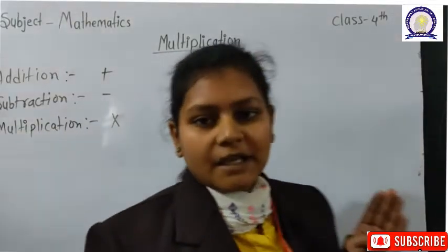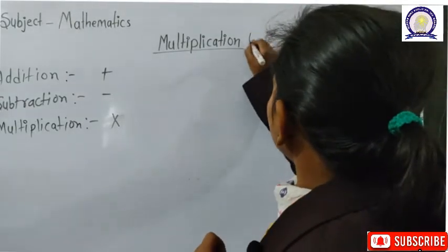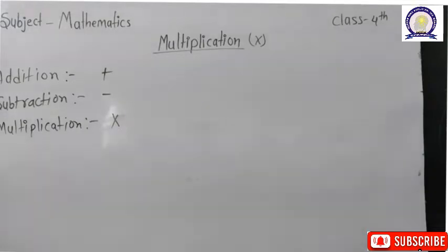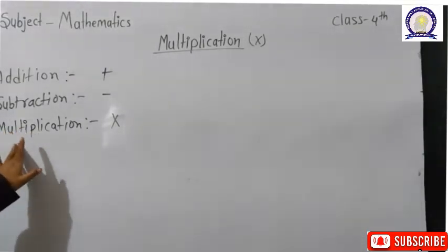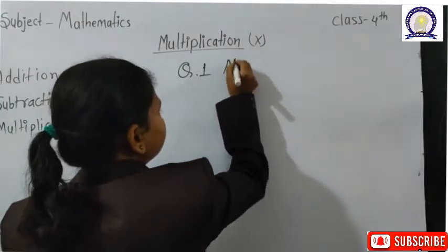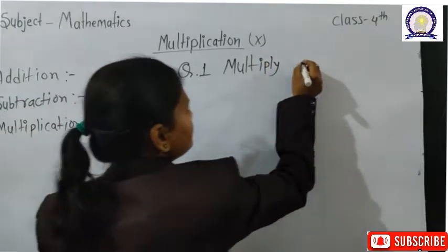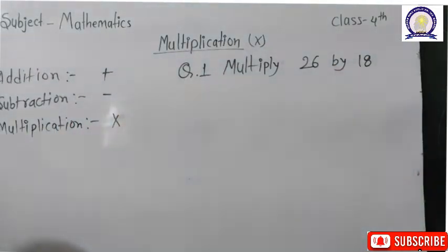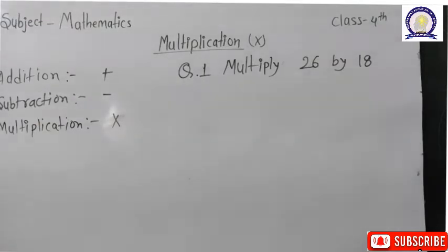So today we will learn multiplication. The symbol of addition is plus, the symbol of subtraction is minus. Similarly, multiplication also has a sign — it is called 'into.' The symbol of multiplication is 'into' (×). So today we will do multiplication and the symbol of multiplication is 'into.'